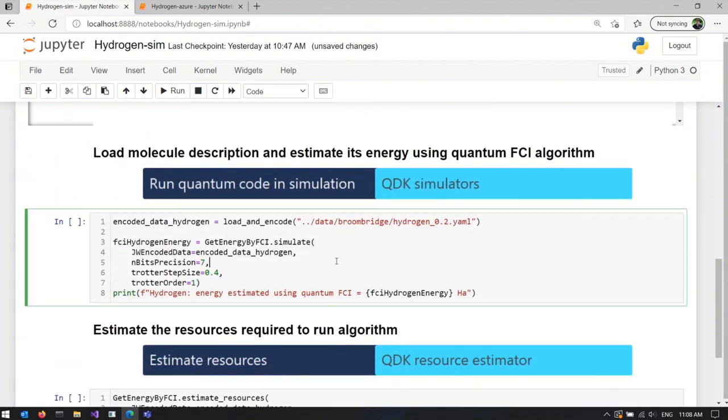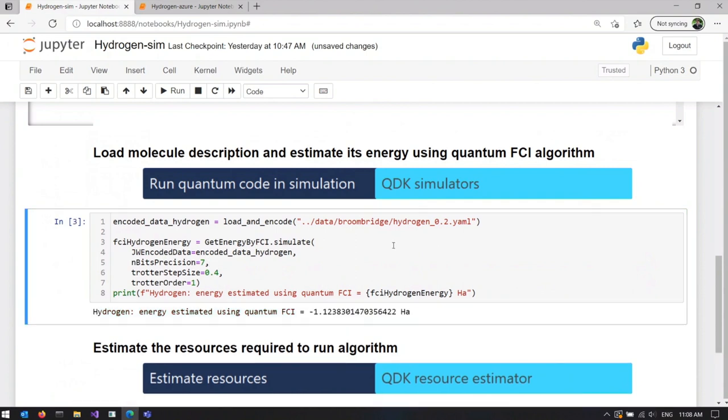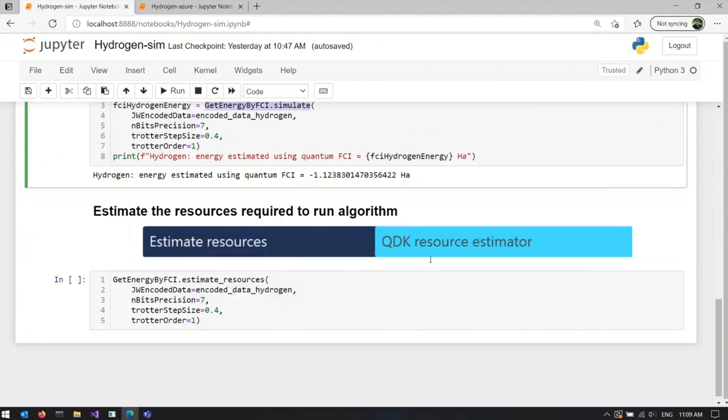Next, we are going to load the molecule properties and to run our program on a local simulator to estimate the energy of this molecule. We do this simulation using this kind of call. This is the name of our quantum operation and we call simulate on it with the right parameters. This is the energy of the actual ground state of the hydrogen molecular we are aiming for.